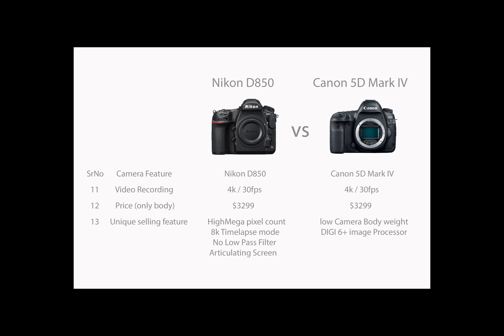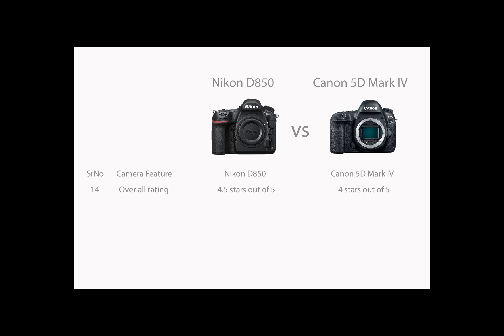Every camera has its own uniqueness. Nikon D850 has a high megapixel count, 8K time-lapse mode, no low-pass filter, and an articulating screen. Whereas Canon 5D Mark IV has a lower camera body weight and DIGIC 6+ image processor. Overall, Nikon D850 is a clear winner compared to Canon 5D Mark IV.